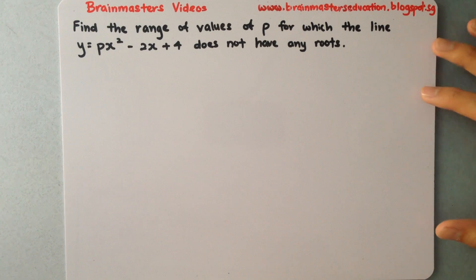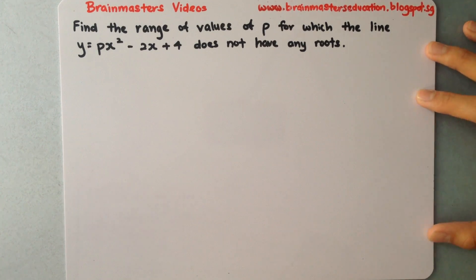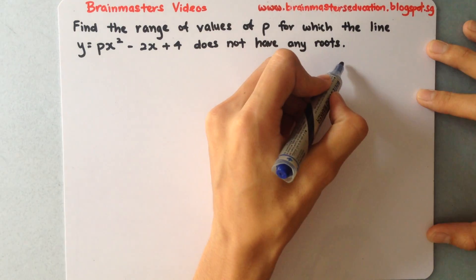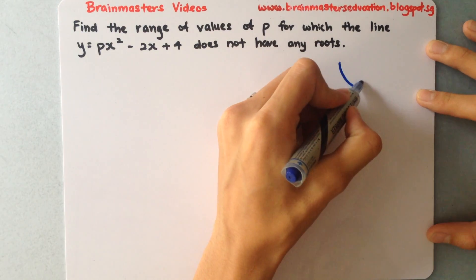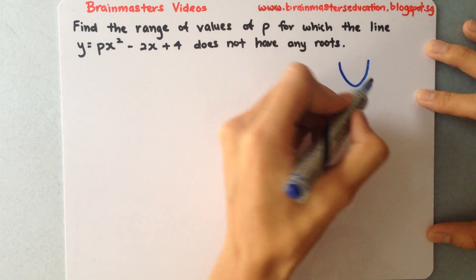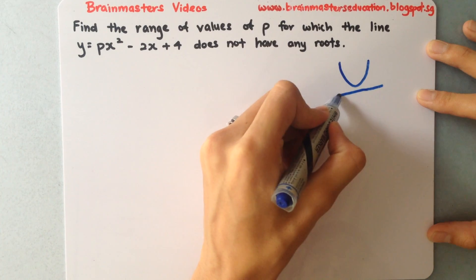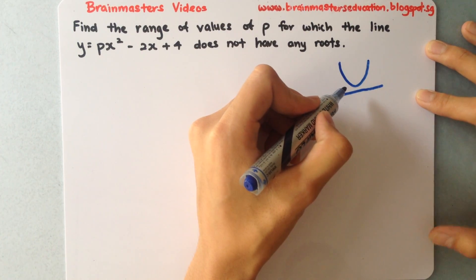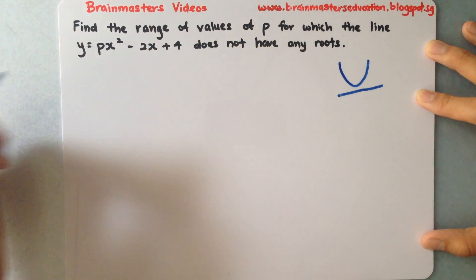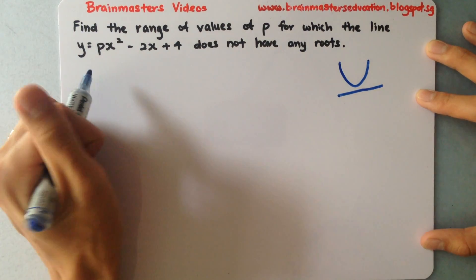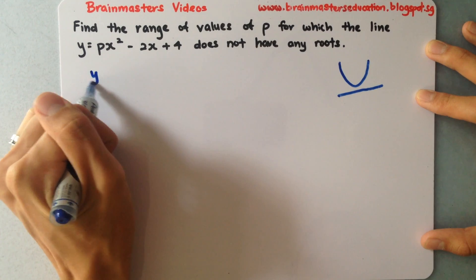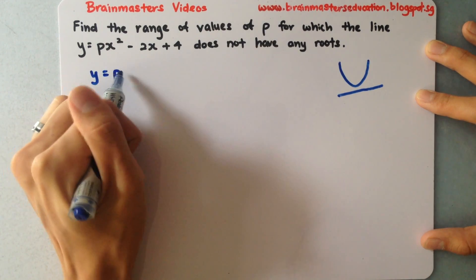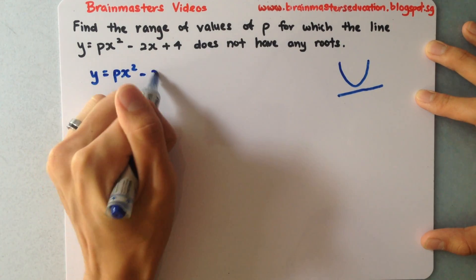What it means is that, by any graph, this equation of y will not cut any line. So we have to use the quadratic discriminant here to help us.